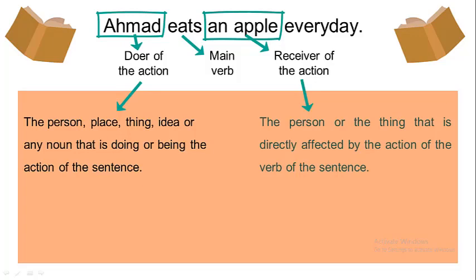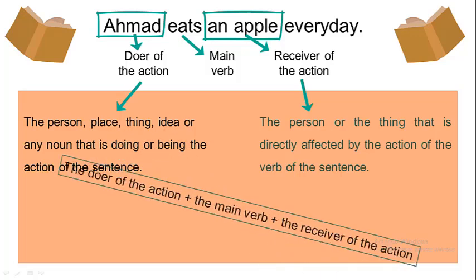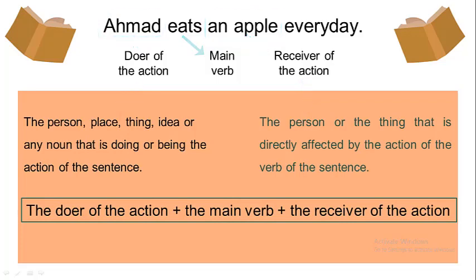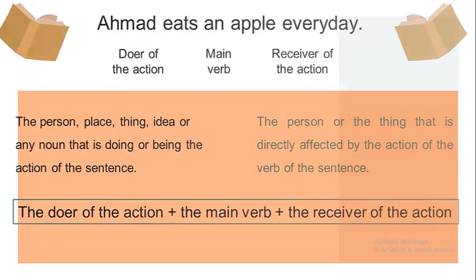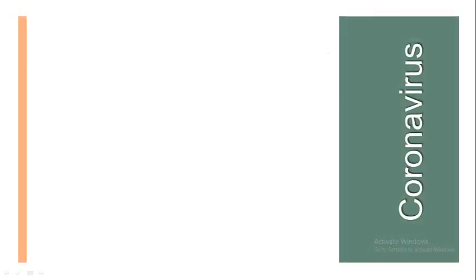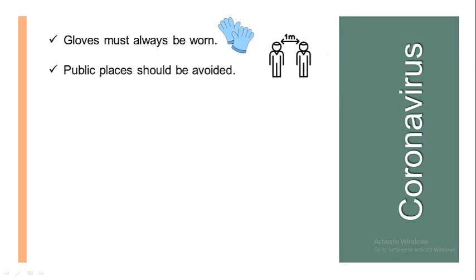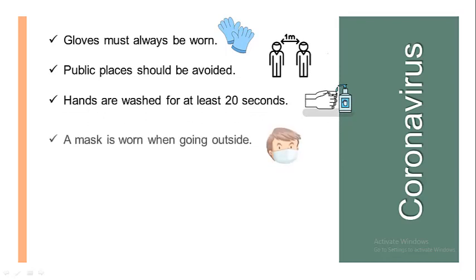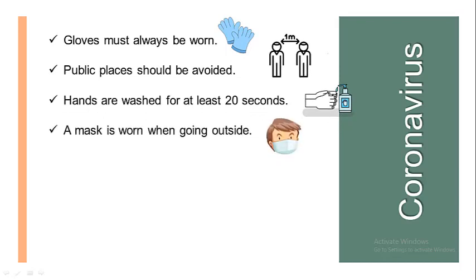Great job. A sentence is made of the doer of the action, plus the main verb, plus the receiver of the action. However, while we hear about the precautions from the coronavirus, we hear sentences such as: gloves must always be worn, public places should be avoided, hands are washed for at least 20 seconds, and a mask is worn when going outside. And if we look closely at these sentences, we'll see that the doer of the action is not mentioned.